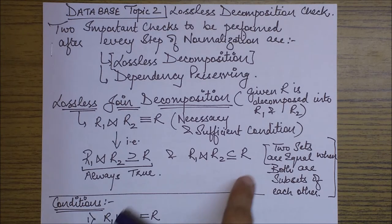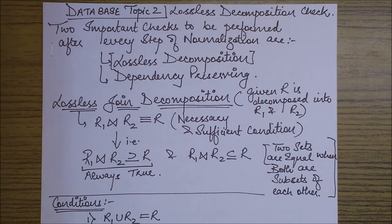So in order to check this with a simpler method, we have basically two to three conditions. We just need to check them and we easily reach out the decision that whether the decomposition was lossless or lossy. So the conditions are as follows.